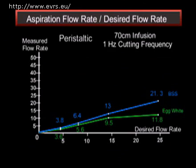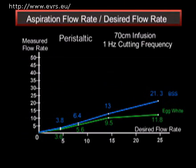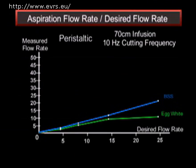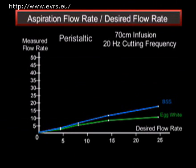With a peristaltic pump operating at 60 cuts per minute, the flow in BSS and the egg white are practically the same, within 10% until 15 cc per minute. For higher flows, the required depressions in the egg white exceed the capacity of the machine. The same findings occur at 300, 600, or 1,200 cuts per minute.